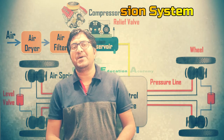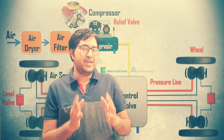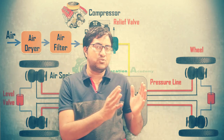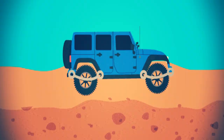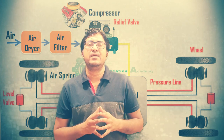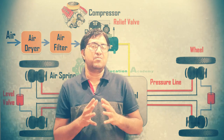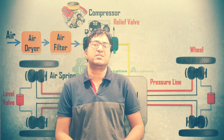First of all, what is the need of the air suspension system? Whenever any vehicle passes through irregular road surfaces, vertical vibration is transferred to the body. Due to this vibration, the vehicle driving quality as well as the life of the vehicle is reduced. To reduce this vibration and uneven movement of the body, a suspension system is required in the automobile. This is the need of the suspension system.